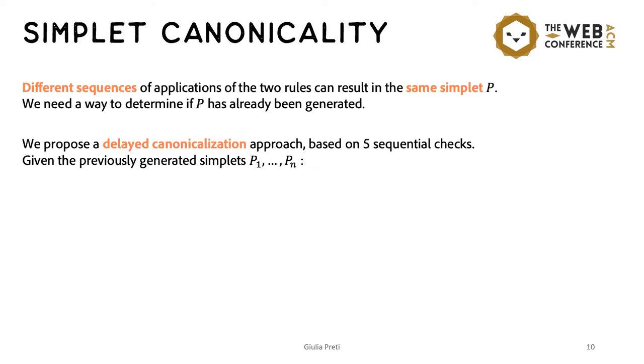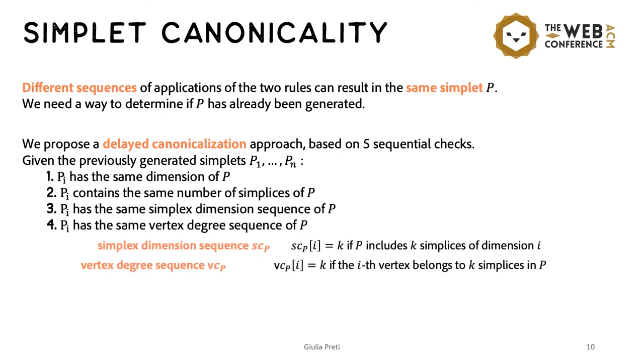In this procedure, we perform several checks of increasing complexity. And these checks are necessary conditions for two simplets to be isomorphic. The first condition states that the two must have the same dimension. The second one states that they must contain the same number of simplices. The third and fourth ones check the degree and size distributions in the simplets.